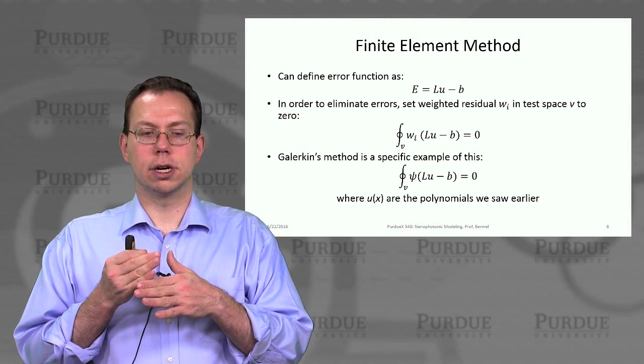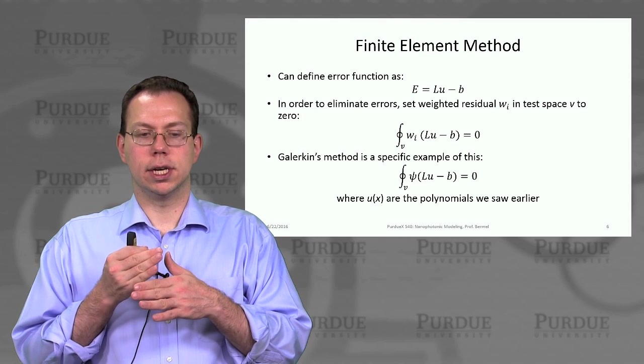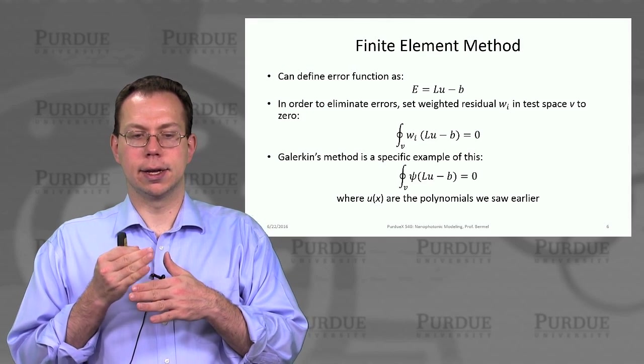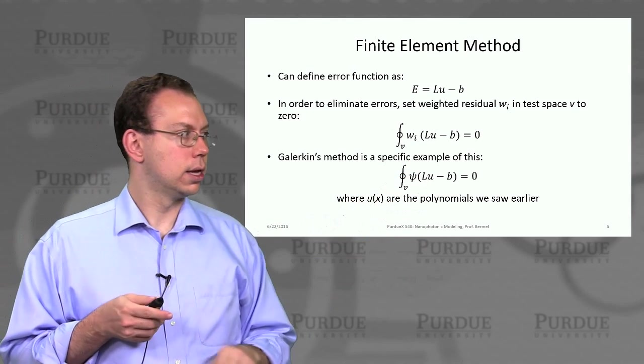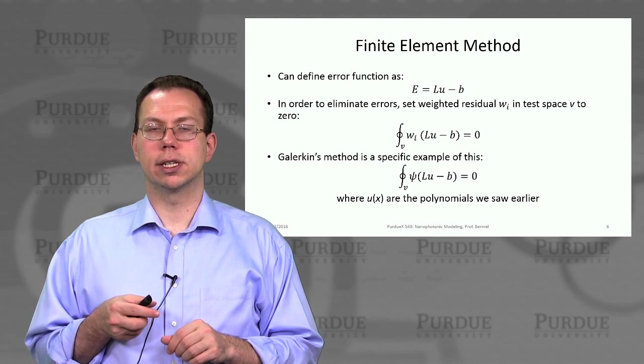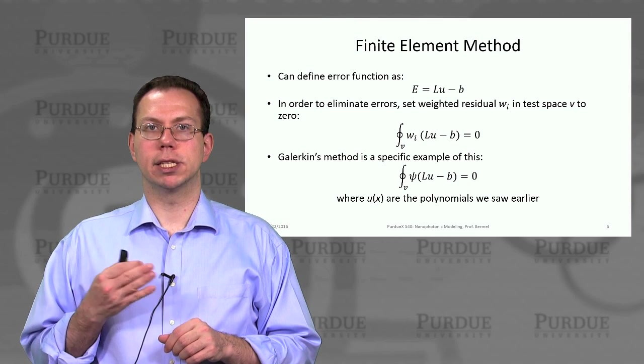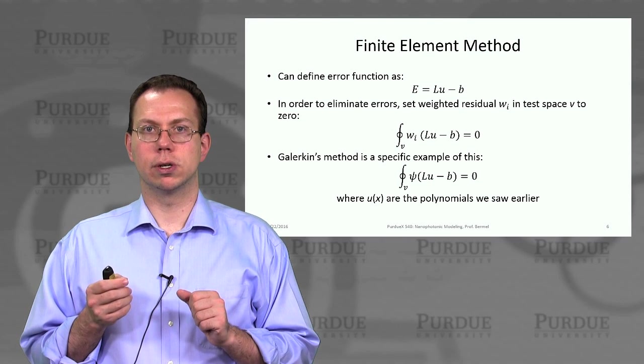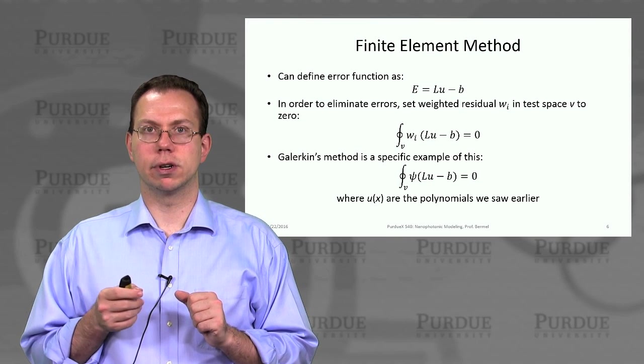And so in the so-called Galerkin method then we would actually choose a specific weighted residual variable called psi in order to achieve this. In the next lecture we'll actually explain in more detail basically how to use Galerkin's method and show a simple example that will set us up for the later problems.